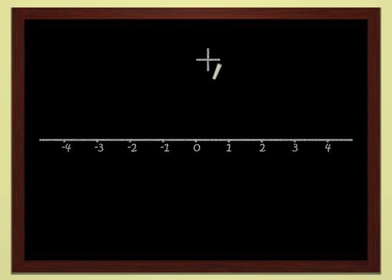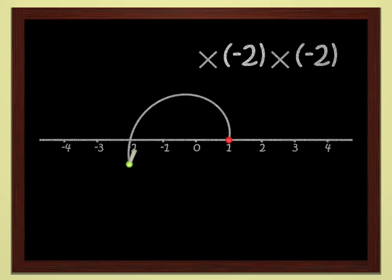More interesting still is multiplication of points. Let's look at multiplication by minus two, for instance. It transforms the point one into the point minus two, of course. And if you multiply again by minus two, you have to do the same thing. Change sides with respect to the origin and double the distance from the origin. You get four, of course. If we multiply twice by minus two, we have multiplied by four.